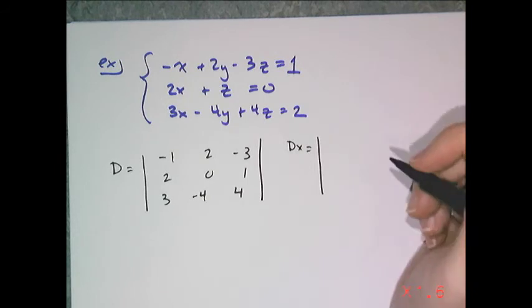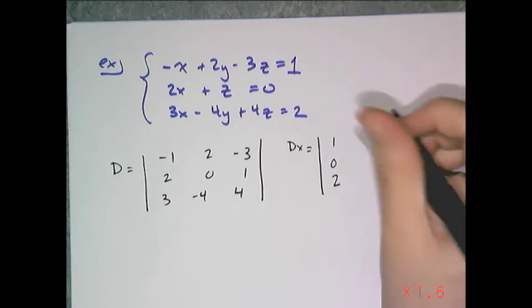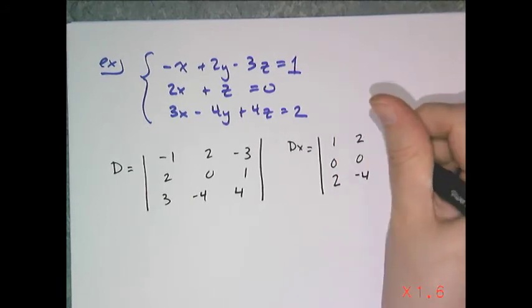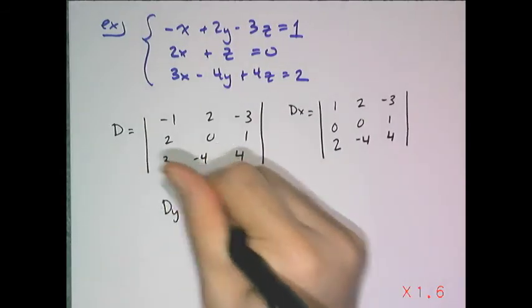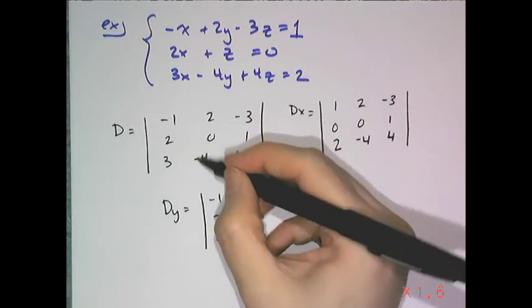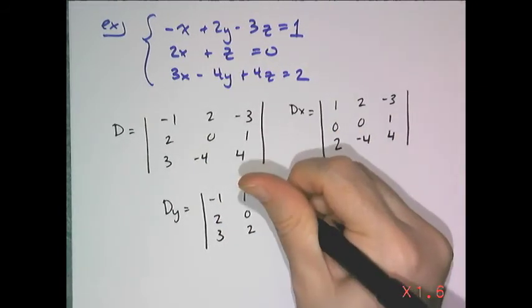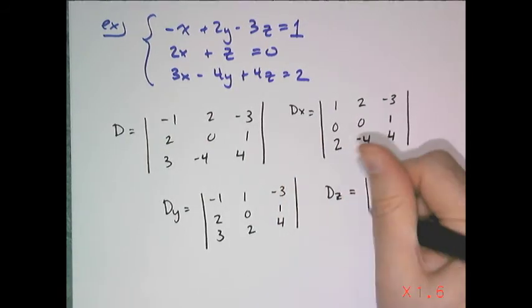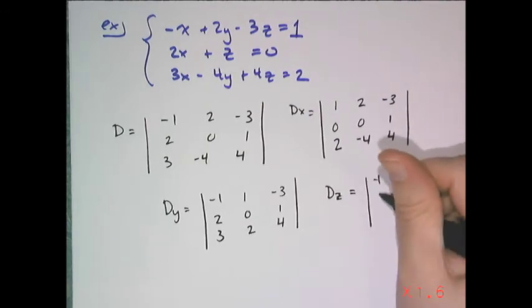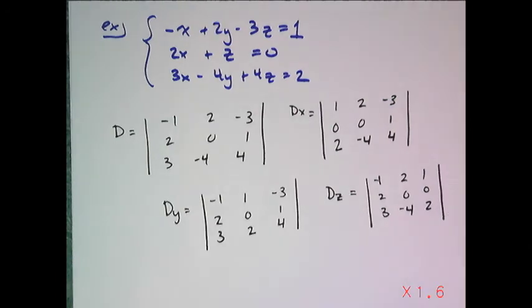So it's 1, 0, 2, 2, 0, negative 4, negative 3, 1, 4. Then to find y, I need to find the determinants of the matrix where the y coefficients are replaced with the constants. So 1, 0, 2 goes in the y column, and the negative 3, 1, 4. And then d sub z, which is the determinant I need to solve for z, has these columns intact, but the zth column is replaced with the coefficients.